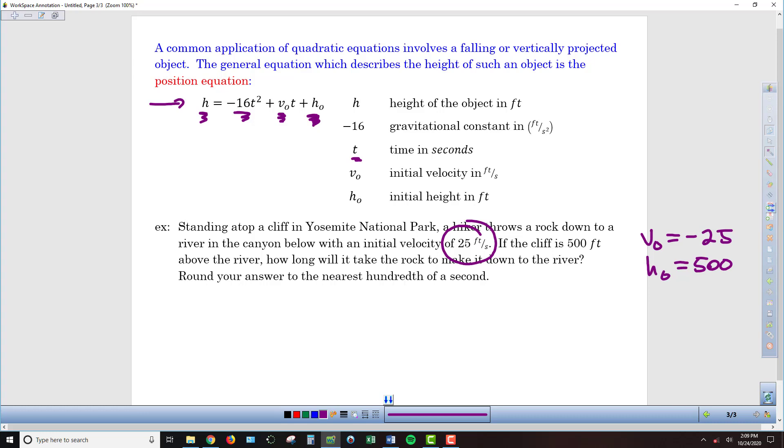And so, we're asked, how long will it take for the rock to make it all the way down to the river, which would imply that we're hitting the ground. So, then that means our final h is going to be zero. So, then the remaining variable that we need to solve for is t. So, using this full equation then,